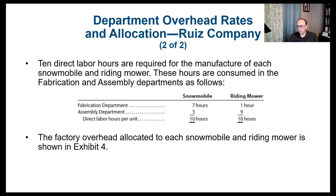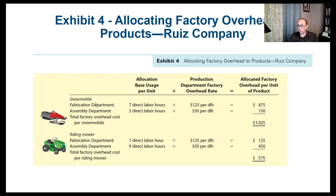The factory overhead allocated to each snowmobile: 7 direct labor hours in fabrication at $125 per hour equals $875, plus 3 direct labor hours in assembly at $50 per hour equals $150 — total of $1,025. For riding mowers: 1 direct labor hour in fabrication at $125 equals $125, plus 9 direct labor hours in assembly at $50 equals $450 — total of $575. Previously under the single method both products had $800 each; now it's $1,025 for snowmobiles and $575 for riding mowers.